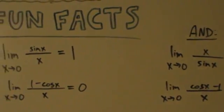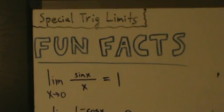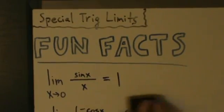Let's see a few examples of how to use these. These will pretty much show up in trig limits when you do direct substitution and get 0 over 0, and you might not see how to factor something, or it just might not be possible to factor. If it's something with trig in it, then you know maybe you could try to use one of these two special trig limits.